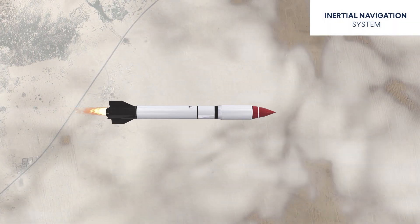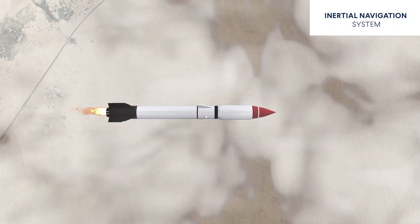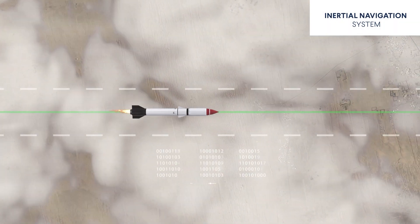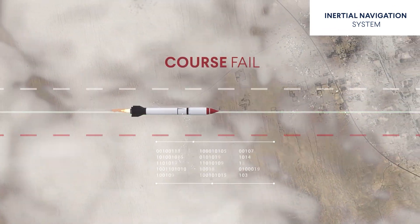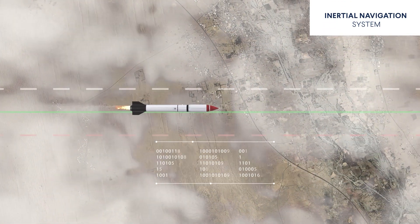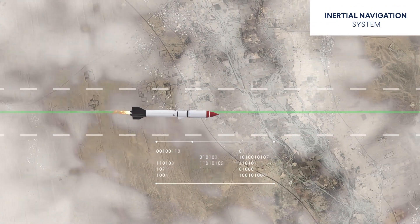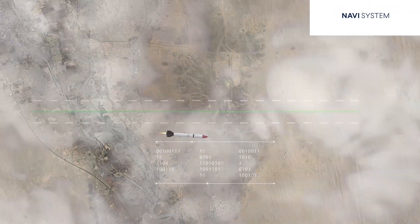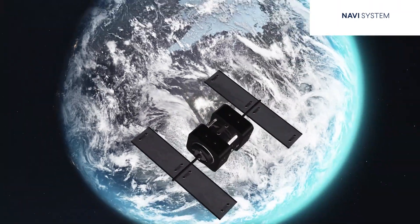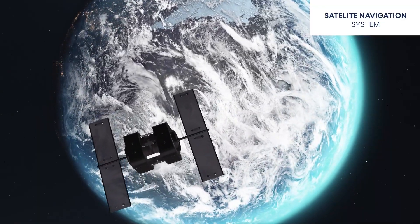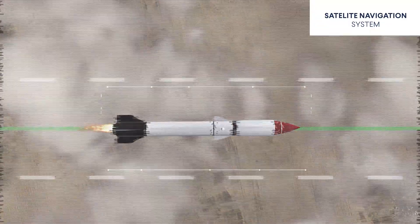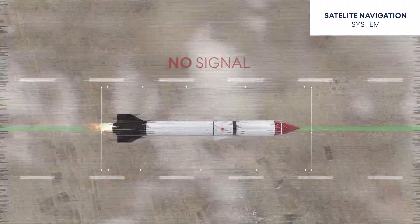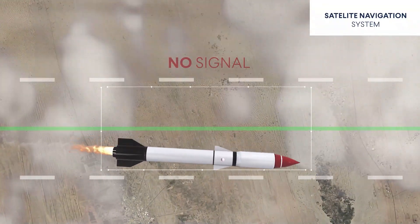Both inertial navigation systems and satellite systems can be inaccurate in some cases. The INS uses integration, which is characterized by the accumulation of errors during integration time, so the final position estimate drifts. On the other hand, satellite navigation systems rely on satellite signals, which can be easily disrupted or faked by an introduced signal, potentially indicating a completely different destination.